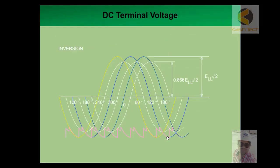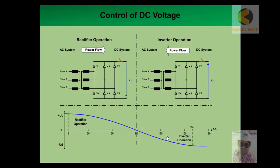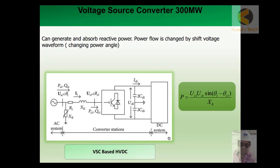With the passage of time, technology developed and a new type of converter was introduced: voltage source converters (VSC). These converters are light in weight. You can see the converter station and symbolic diagram of VSC converters. By the VSC equation, power can be transmitted, and VSC can generate and absorb reactive power. Power flow is changed by shifting the voltage waveform and changing the power angle.